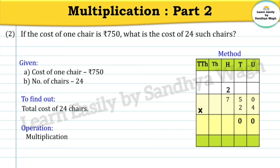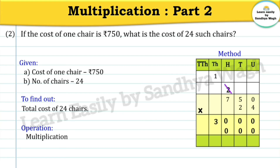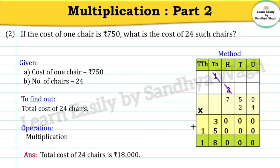Four zeros are zero, four fives are twenty so write zero and carry two, four sevens are 28 plus two is 30. Now multiply by 2: two zeros are zero, two fives are ten so write zero and carry one, two sevens are 14 plus one is 15. Adding all the partial products: zero; zero; zero; eight; and one. Our final answer is the total cost of 24 chairs is 18,000 rupees.